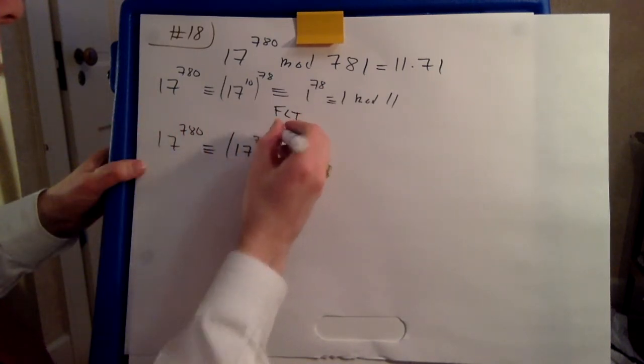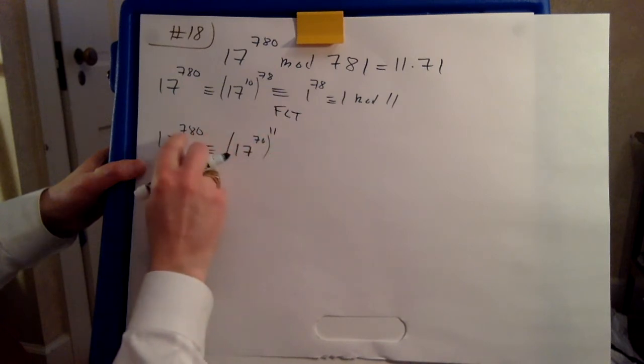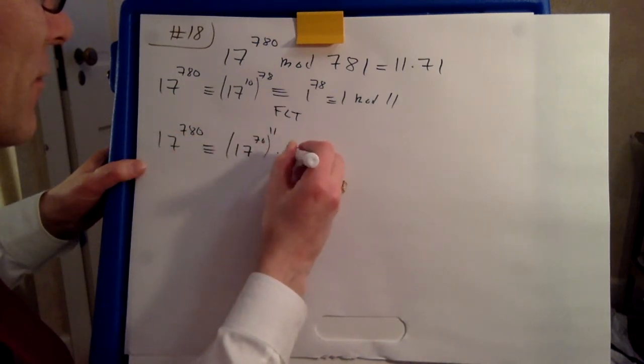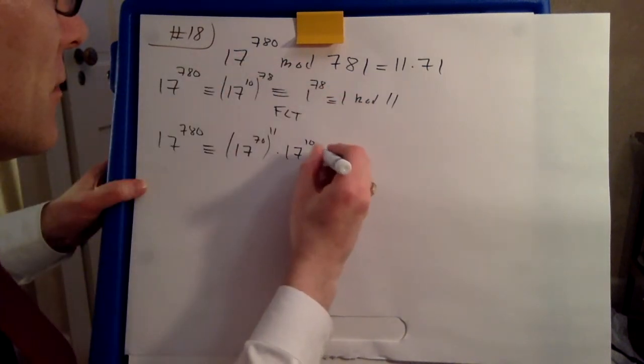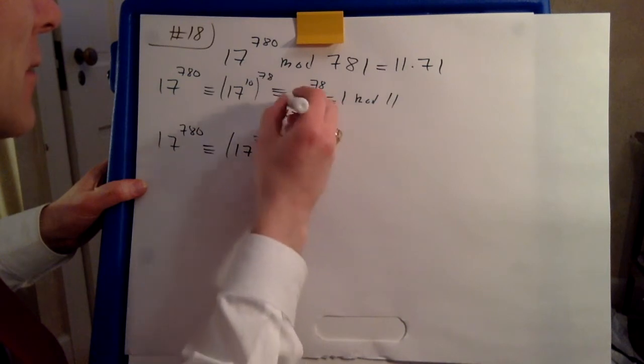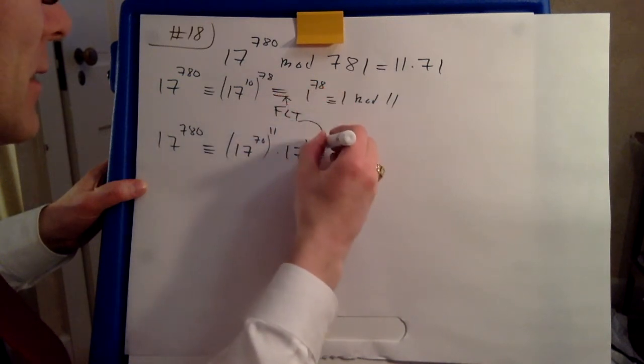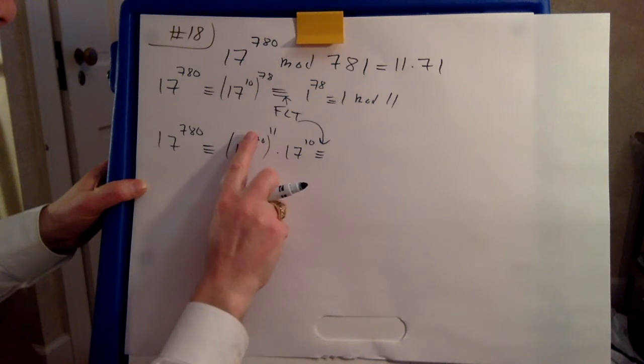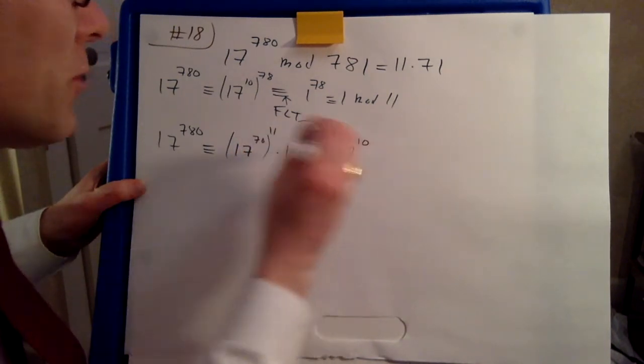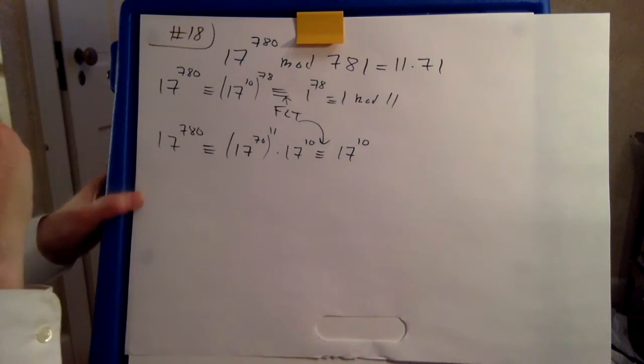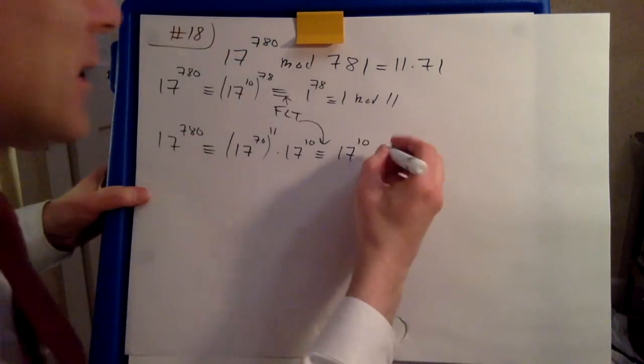70 times 11, and now 7 times 70. So we have 10 left over there. Okay, so this again by FLT here and FLT here. We know that this is 1 mod 71. So we're left with 17 to the power of 10. It doesn't look too friendly but here we go.